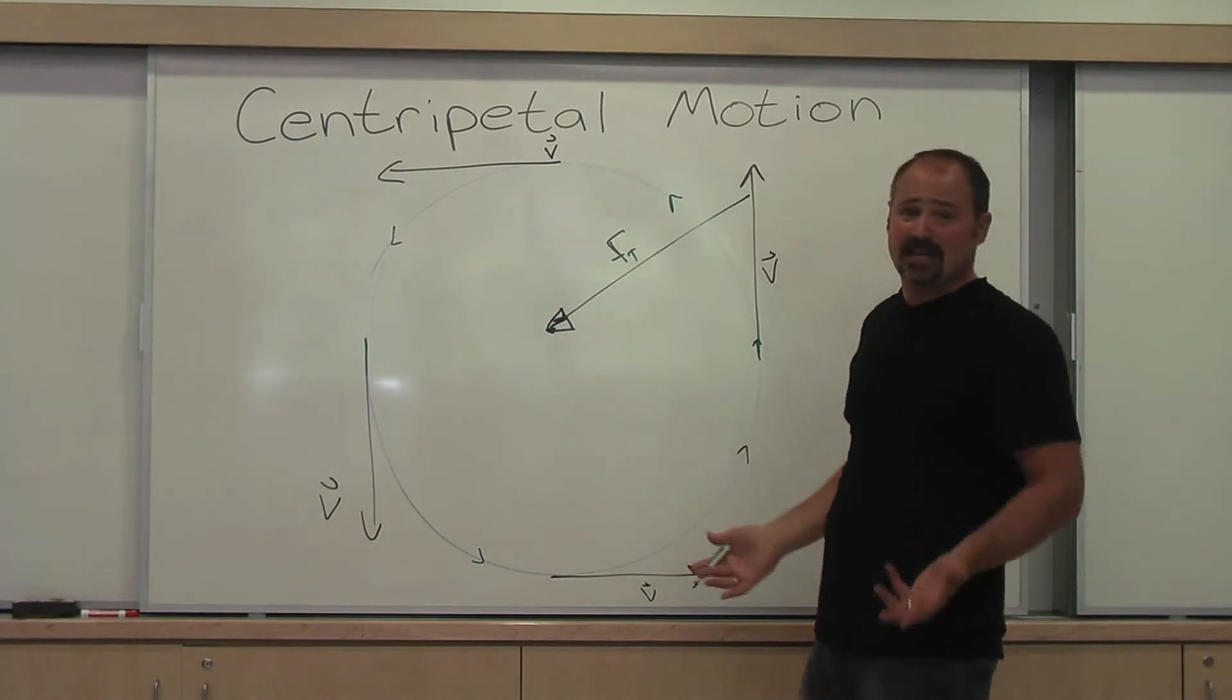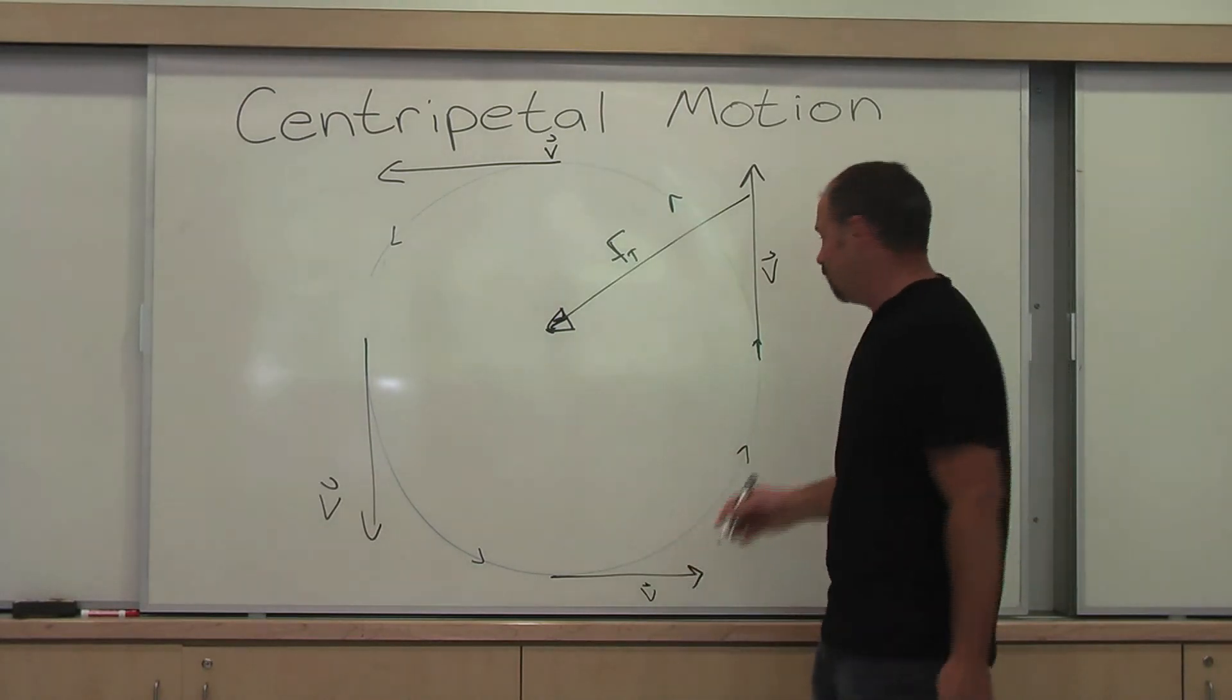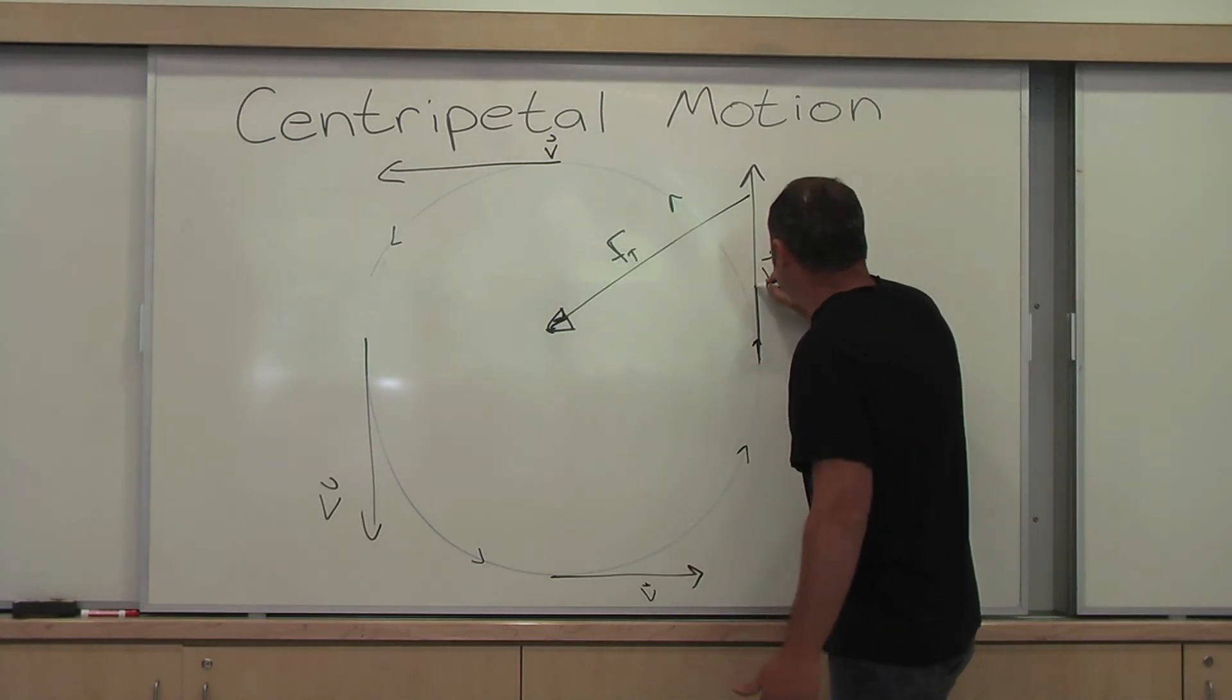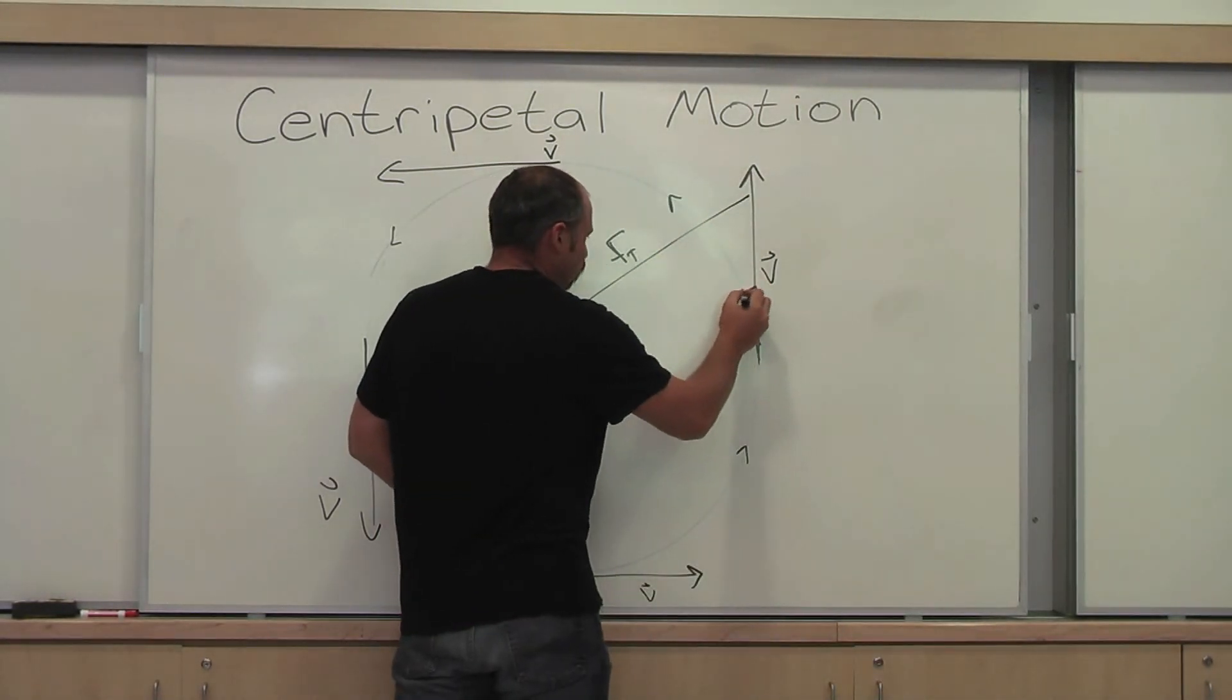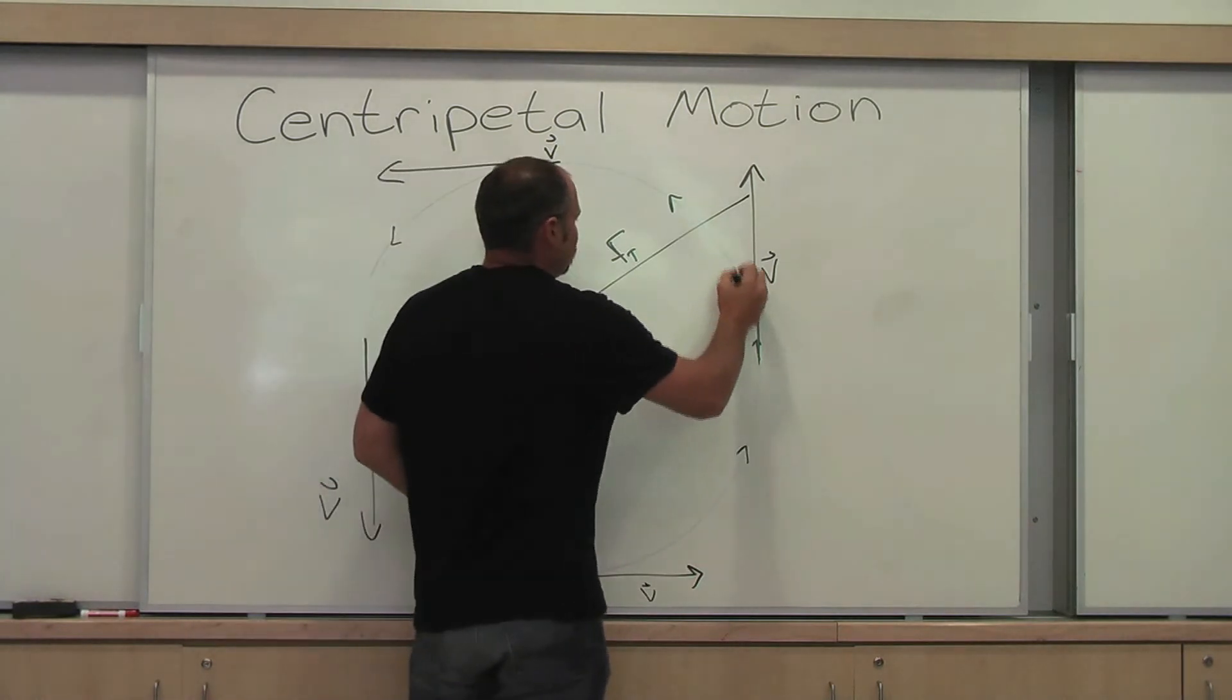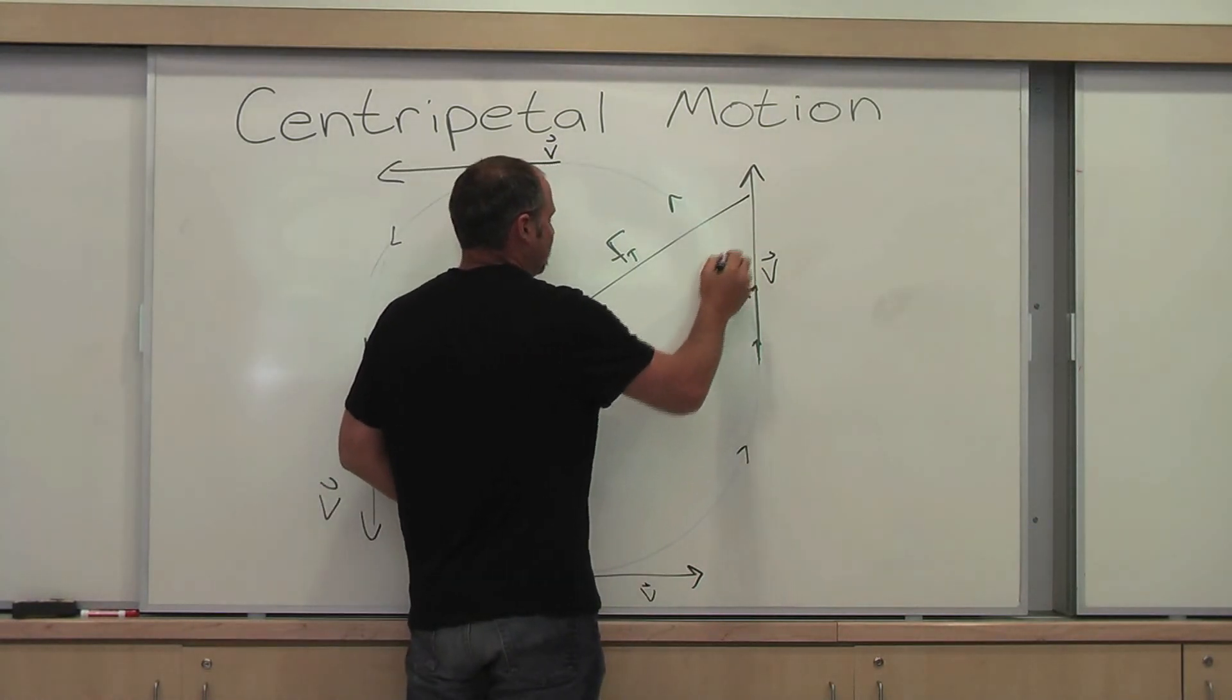Its inertia would take it in that direction. That's Newton's first law. So its inertia wants to go this way, but there's a force that then brings it in to the circle. And then same thing here, the force brings it in.